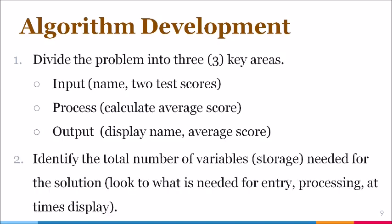Second thing that we need to identify is the total number of variables needed for the solution. Now to identify this, it is recommended that we look at the entry that needs to be made within the code as well as the processes that need to take place. At times, you may need to look at the display that is being requested to identify the total number of variables.